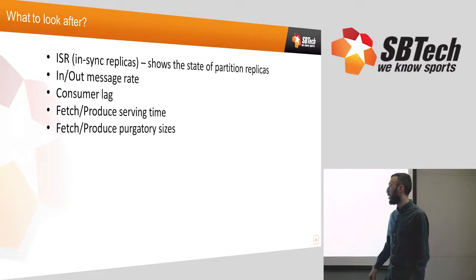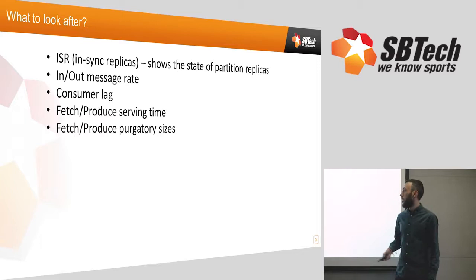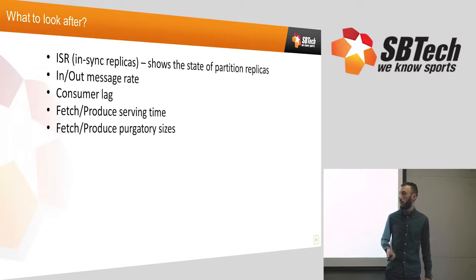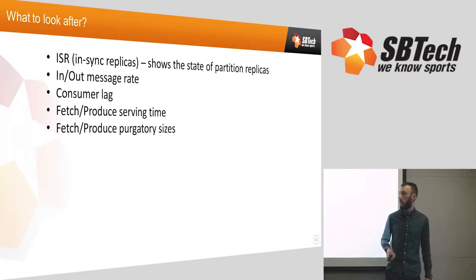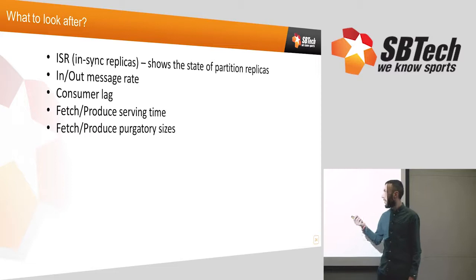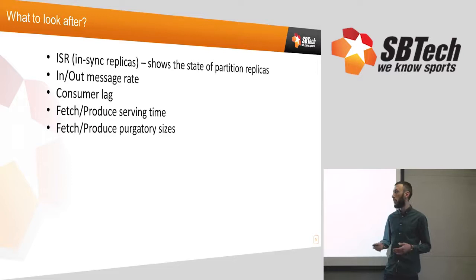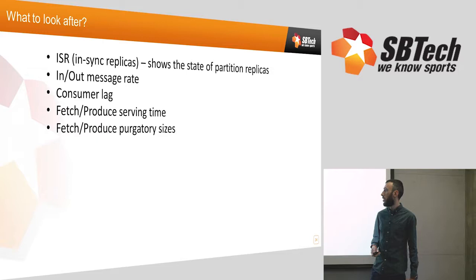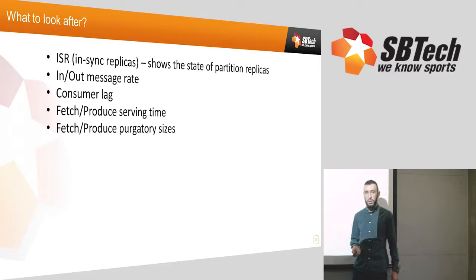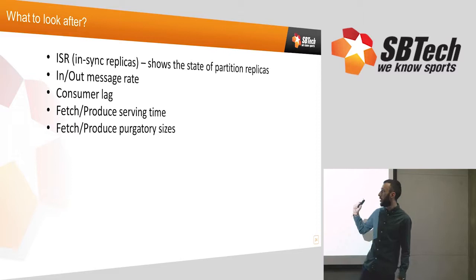We're looking at what makes a good and healthy Kafka cluster. ISR — in-sync replicas — is a really important metric showing the state of replication for a particular partition. It should normally equal the number of replicas in a topic. If it goes below that value, something is slowing down your network or a broker is having a hard time replicating data. If ISR goes to zero, you wouldn't even be able to produce messages. This is, I would say, the most important metric there is.